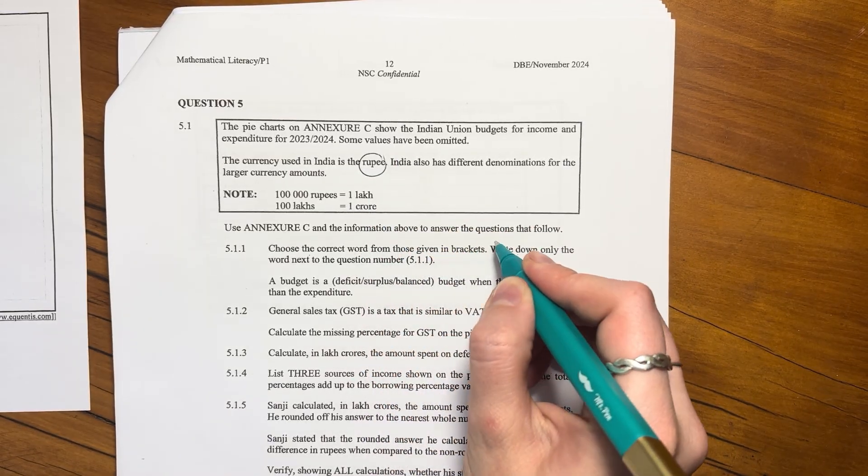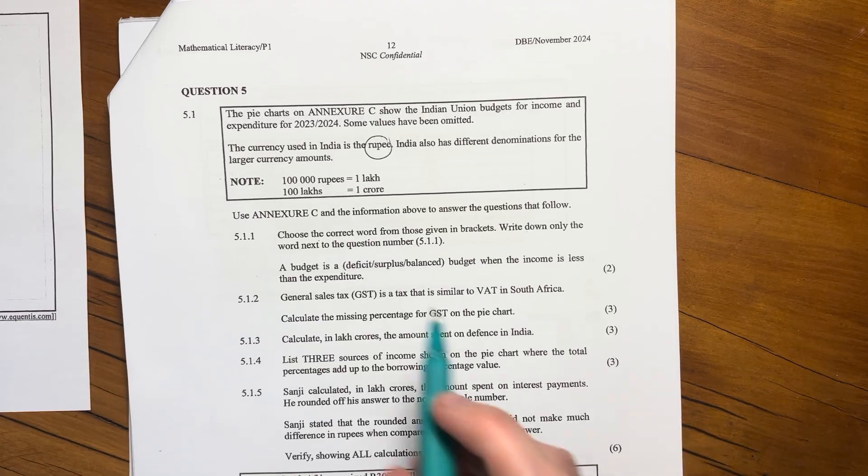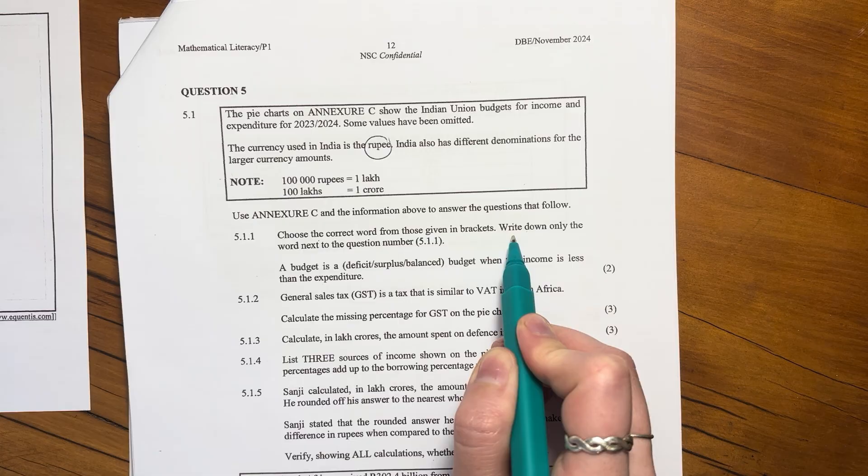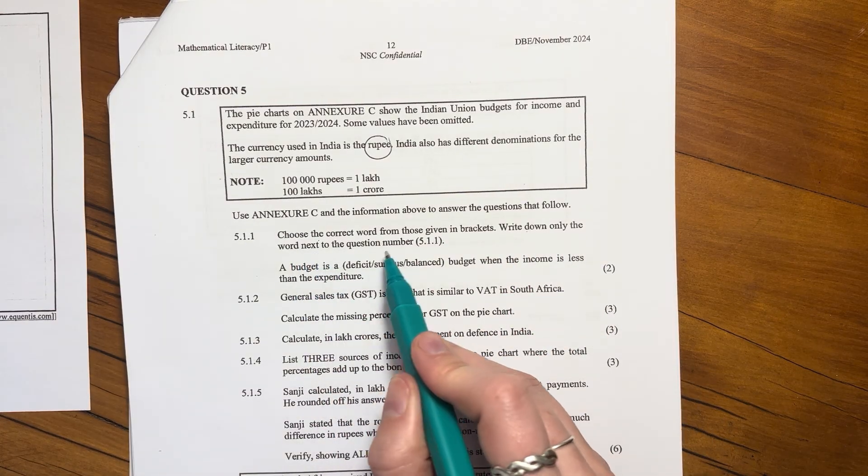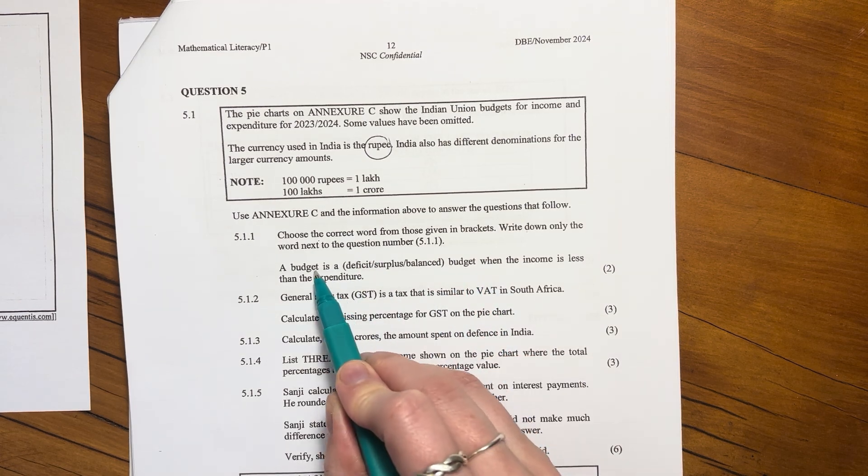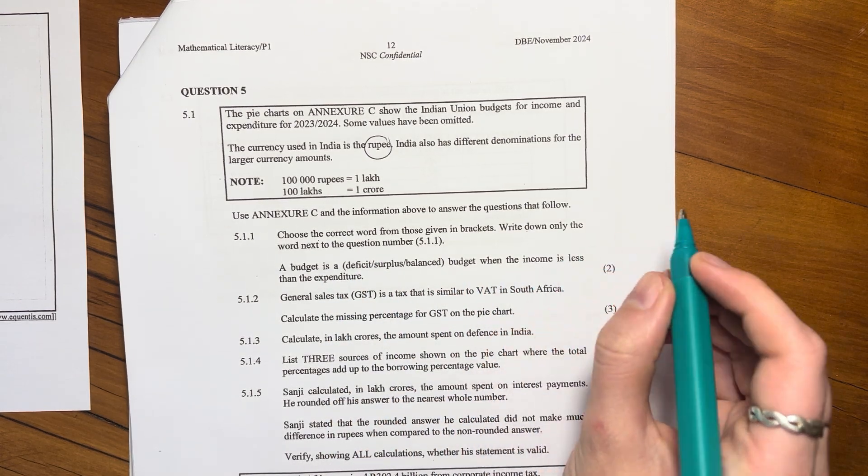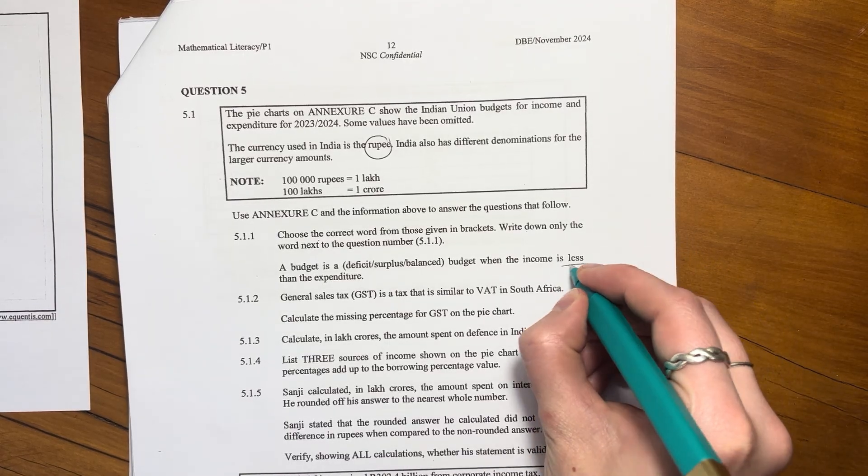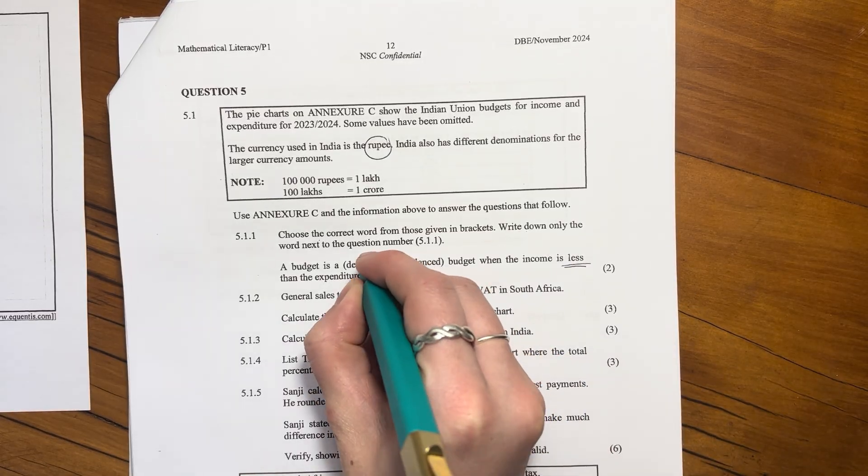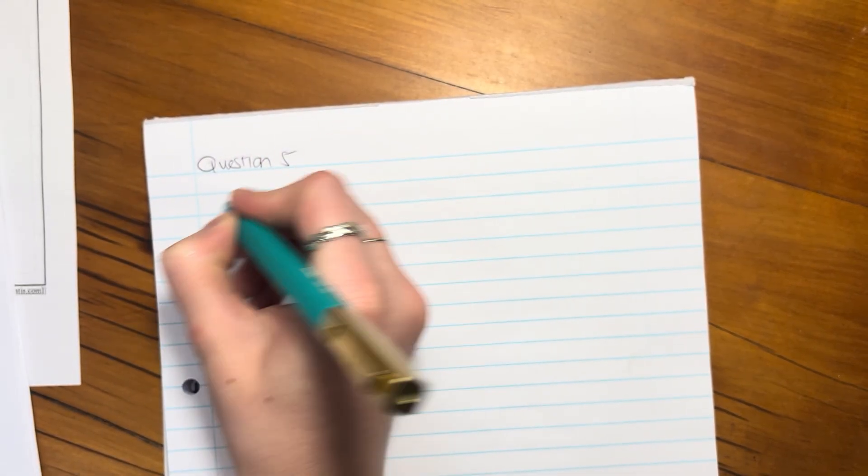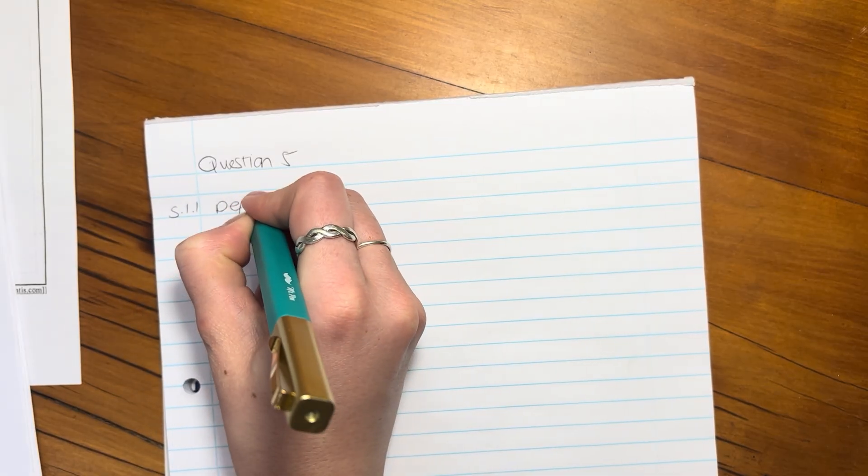Use Annexure C and information about the answer to answer the questions that follow. So 5.1.1, choose the correct word from those given in brackets. Write down only the word next to your question number. So a budget is something. The budget is a something budget when the income is less than the expenditure. So when the income is less than the expenditure, it's going to be a loss. Another word for loss is deficit. So the answer there, Question 5.1.1, deficit.